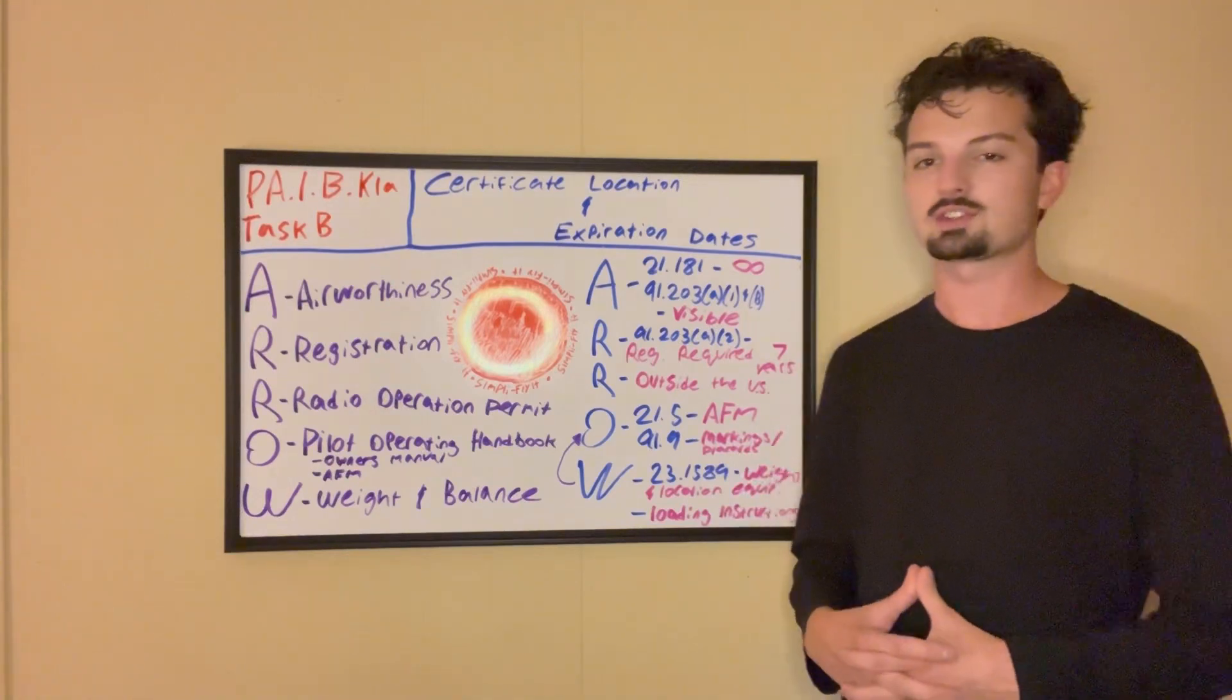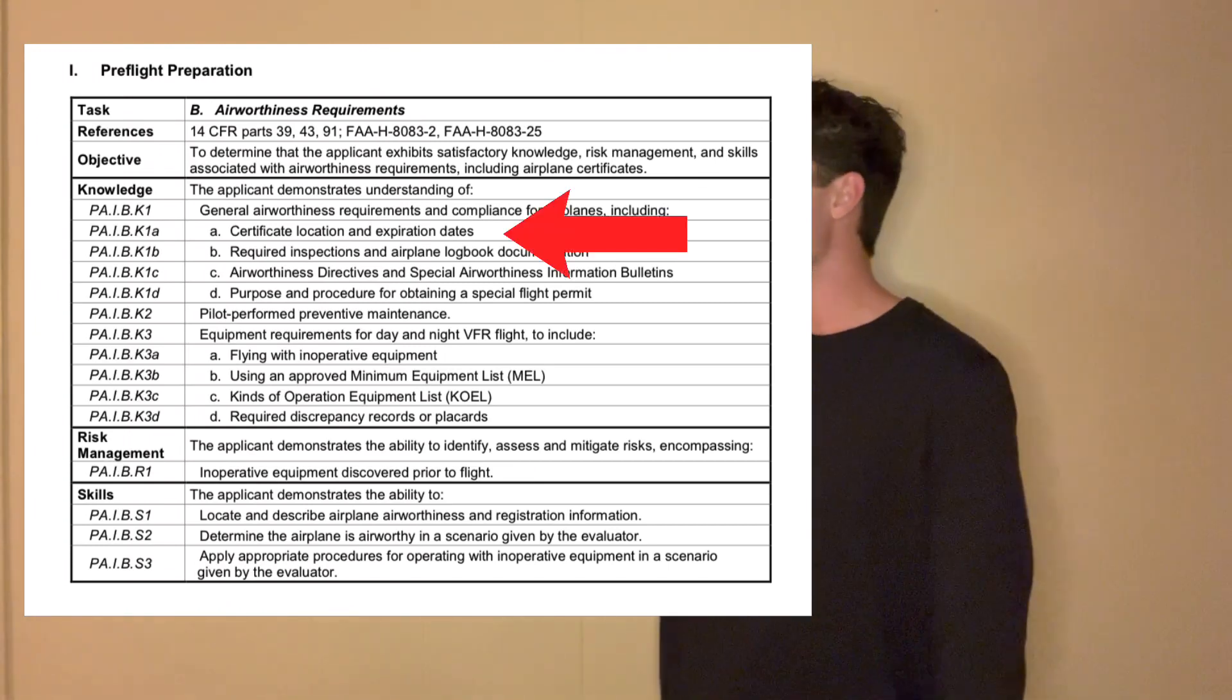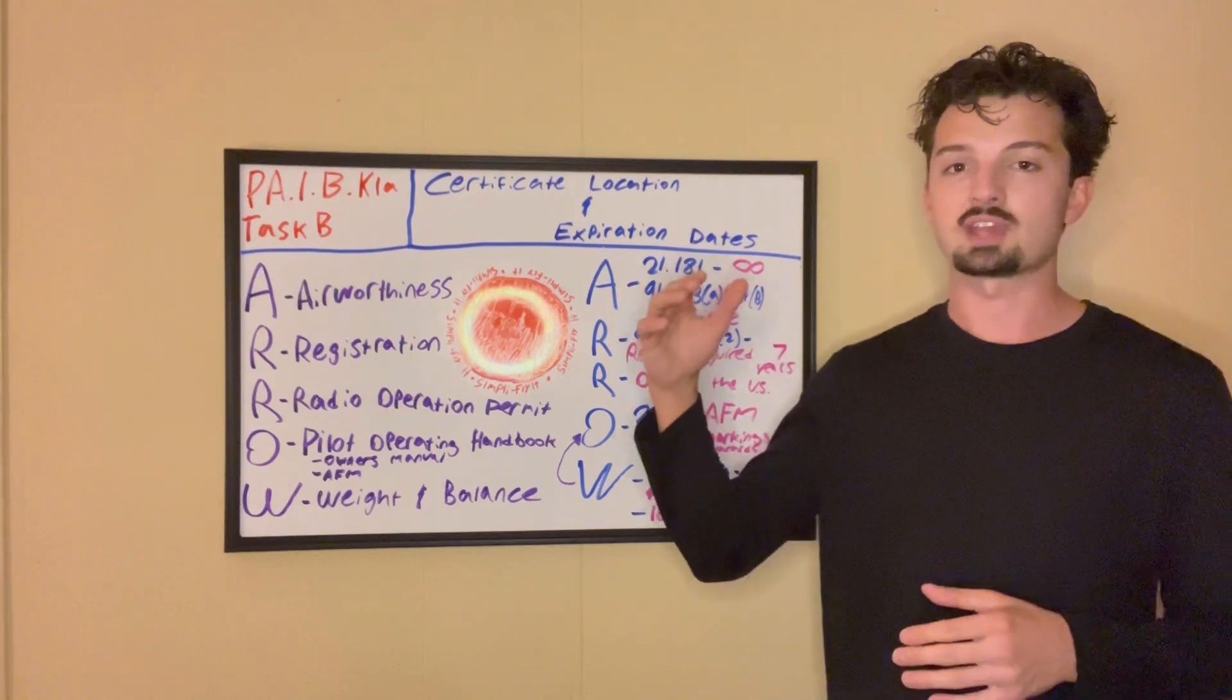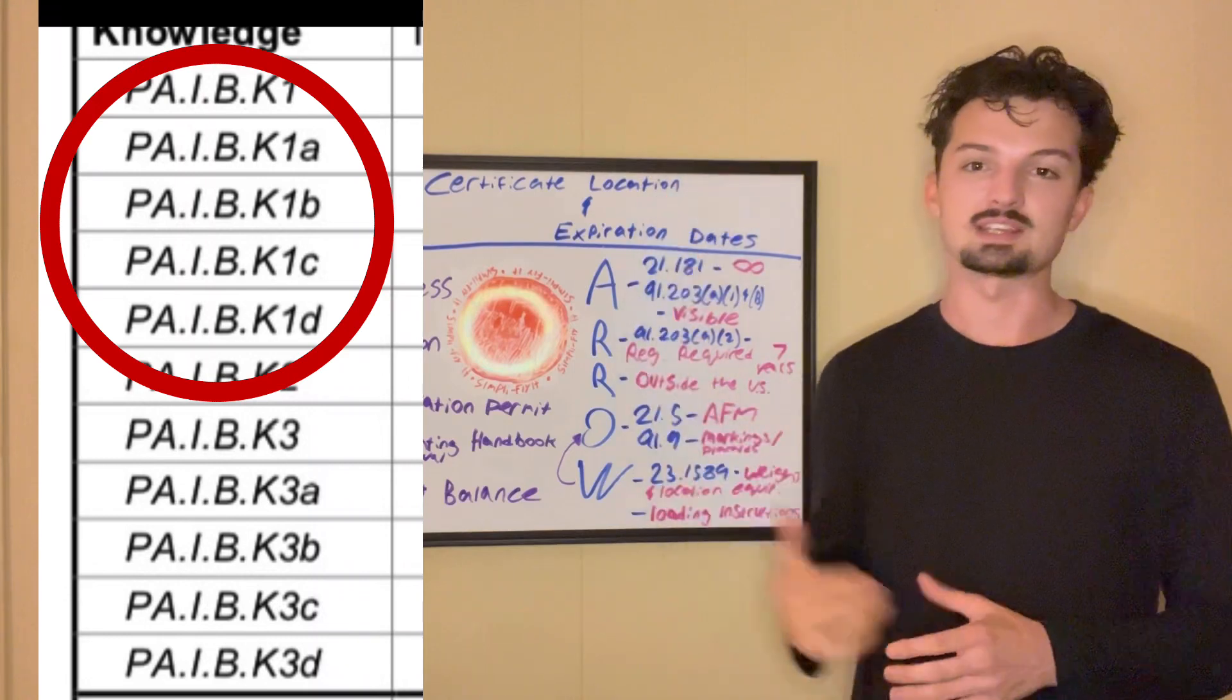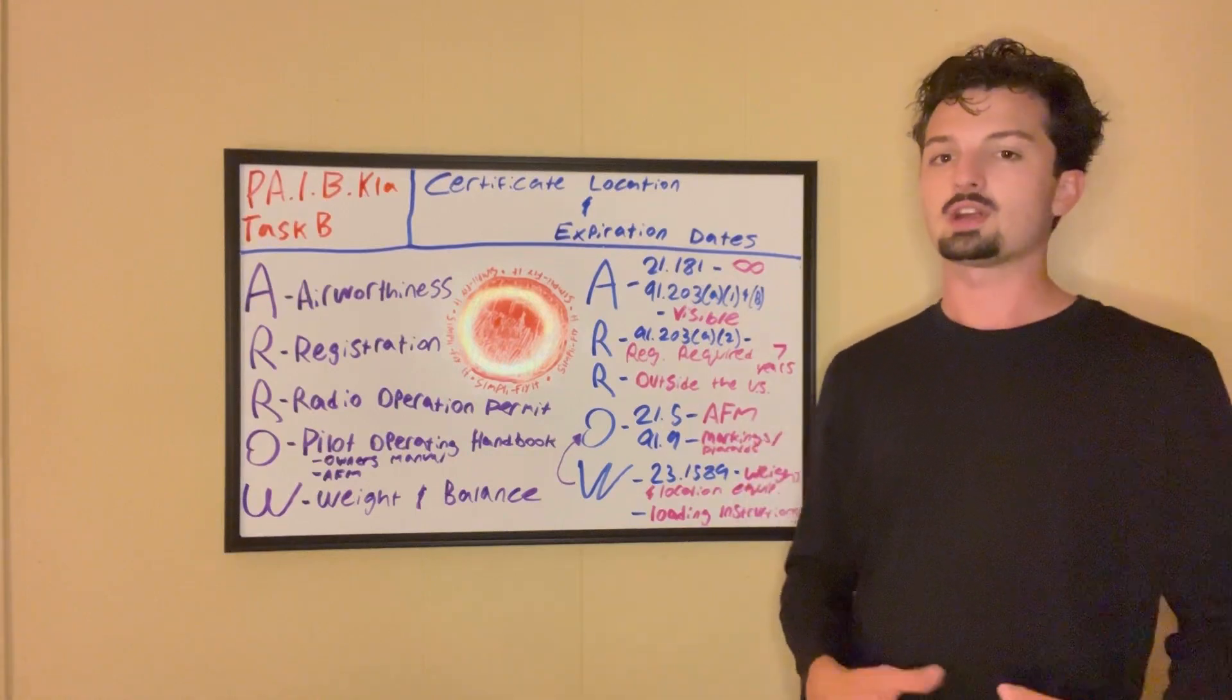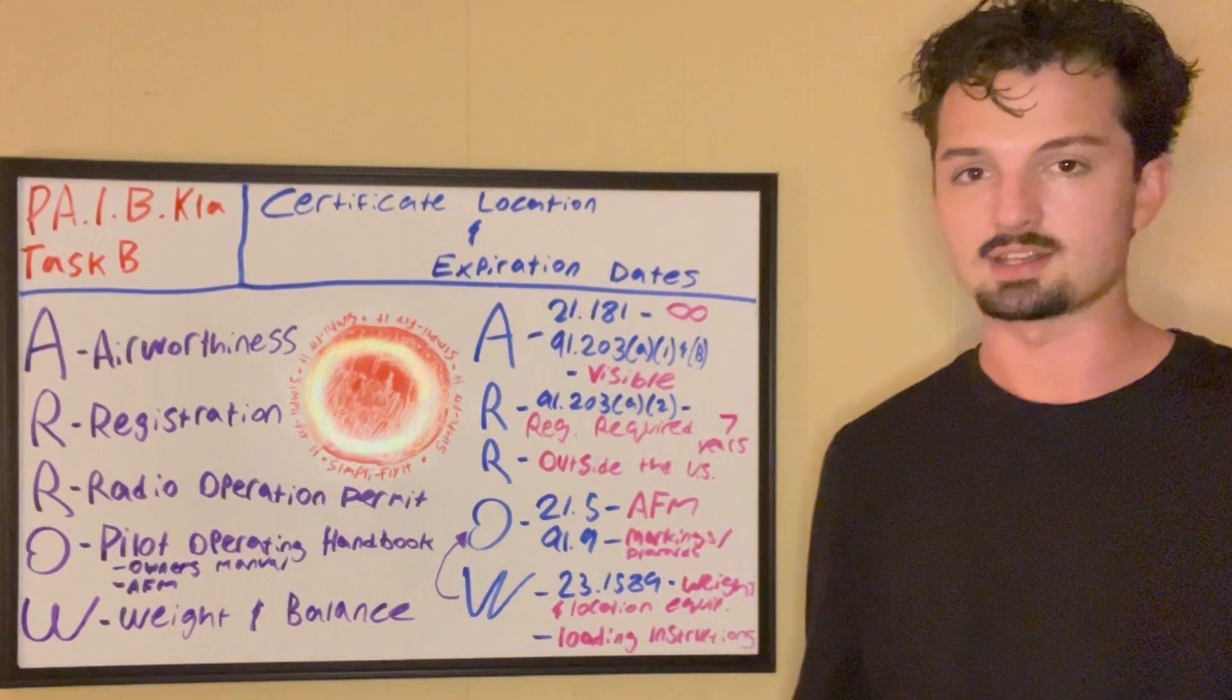So we're starting out with the first section of Task B, which is Certificate Location and Expiration Dates, or PAIBK1A. And if you look at the format, the subsections in Task B have one subsection with sub-subsections that are labeled A, B, C, and so on. So this is A. There's not a ton that goes into this first subsection. There's a very helpful acronym on here that you definitely have to know for your check ride, so make sure that this is burnt into your head if it's not already.